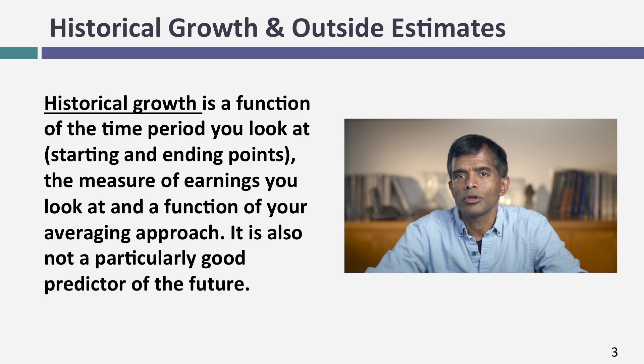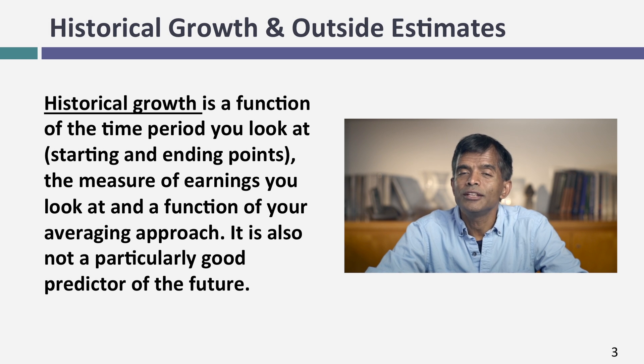What kind of growth has this company had over the last three years, five years, or ten years? That sounds like a fact, but you'd be surprised at how different these numbers can be if you're looking at different time periods. Your starting point and ending point matter, as does how you compute the growth rate — using arithmetic averages or a compounded average. It could also vary depending on which measure of earnings you use. The growth rate in EBITDA, EBIT, net income, and earnings per share can all be very different numbers. While people talk about the historical growth rate as if it's a fact, it is an estimate like everything else.